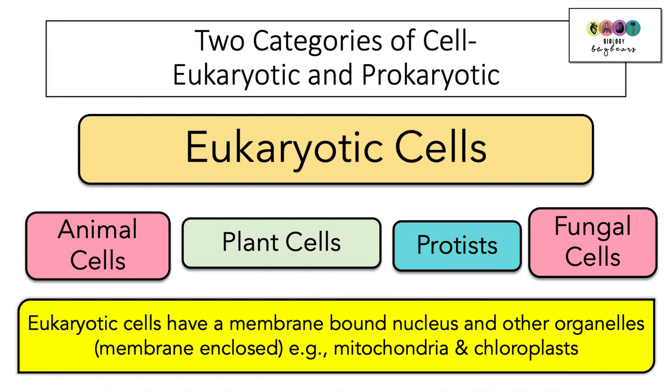There are two categories of cell, eukaryotic cells and prokaryotic cells. Eukaryotic cells are most cells so they're all animal cells, plant cells, protists like the amoeba which you'll study later on and fungal cells so all of these are eukaryotic cells. So define eukaryotic. Eukaryotic cells have a membrane-bound nucleus so a nucleus with a membrane around it and other organelles which are also membrane enclosed.